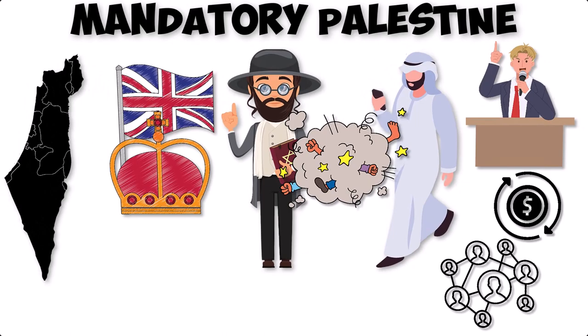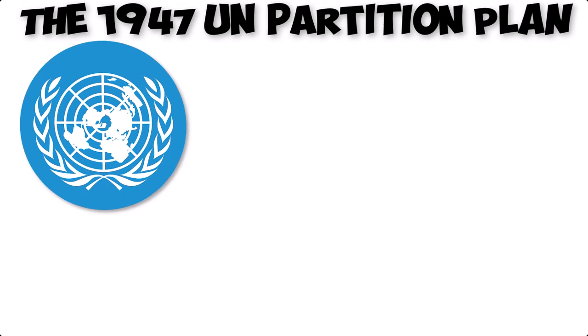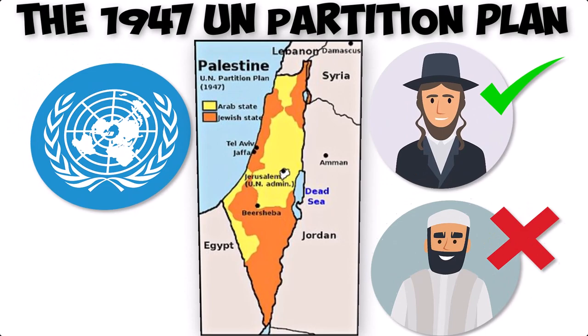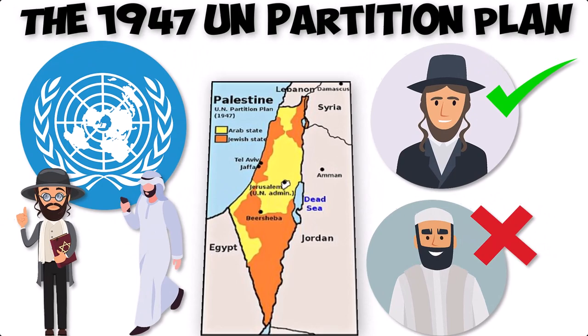Khalidi analyzes the United Nations' 1947 Partition Plan, which recommended the division of Palestine into separate Jewish and Arab states, with Jerusalem under international administration. The plan was accepted by Jewish leaders but rejected by Arab states and Palestinian Arabs. This marked the beginning of the First Arab-Israeli War.